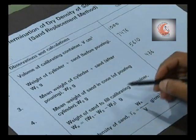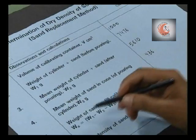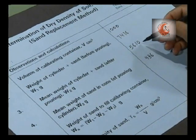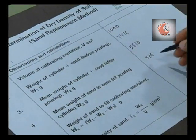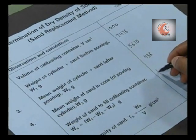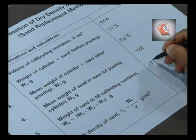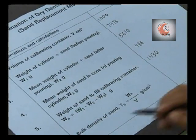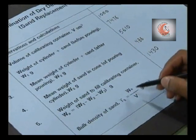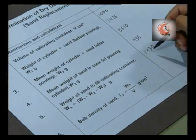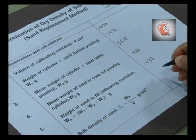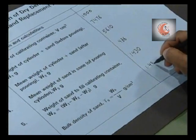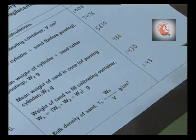Weight of sand to fill the calibrating container, that is WA, is the difference of W1 minus W2 minus W3. Bulk density of sand is the ratio of weight per unit volume. So in this case, it is 1.43 grams per centimeter cube.